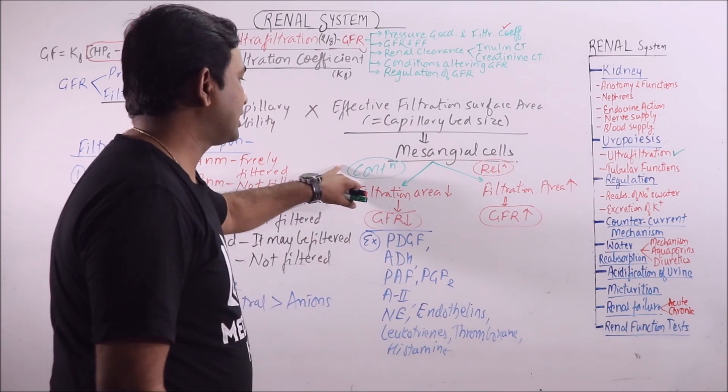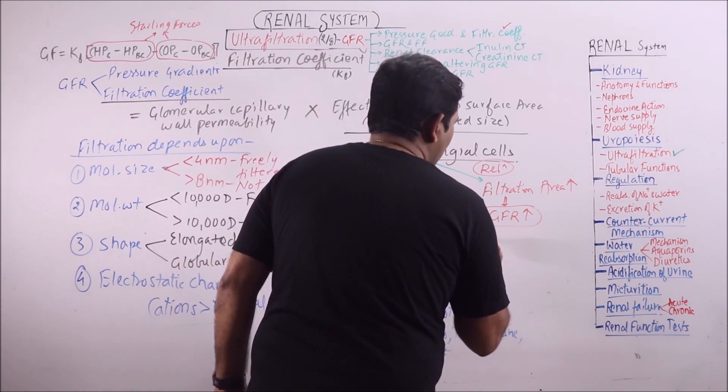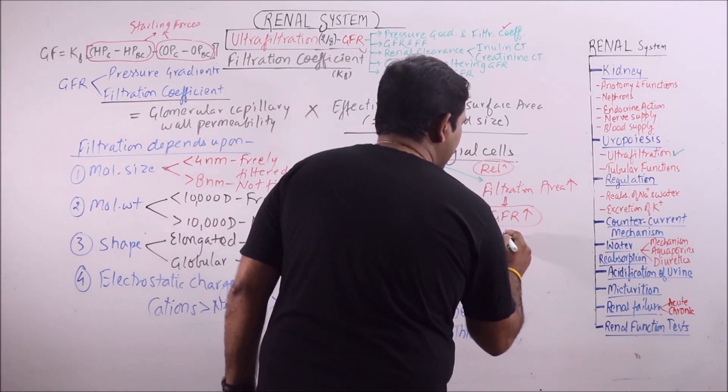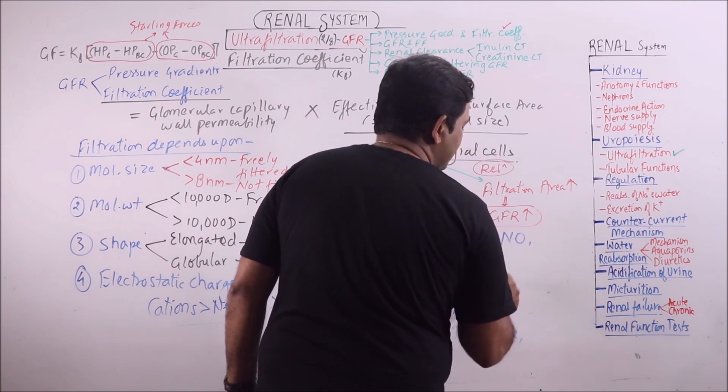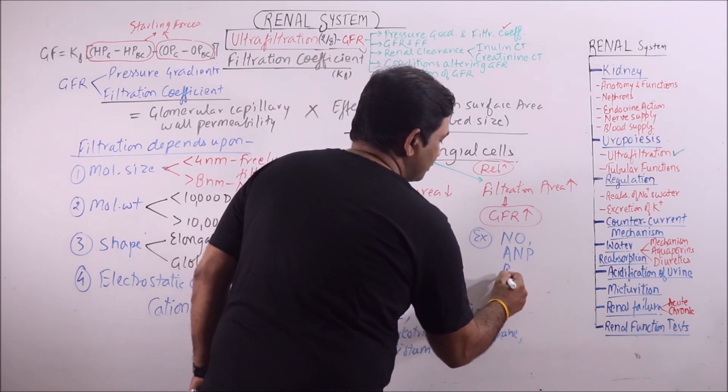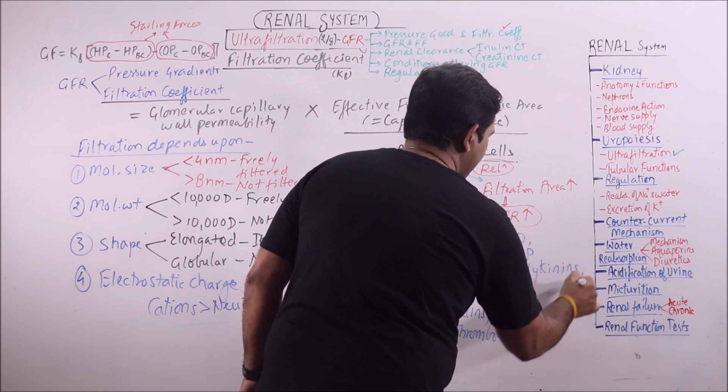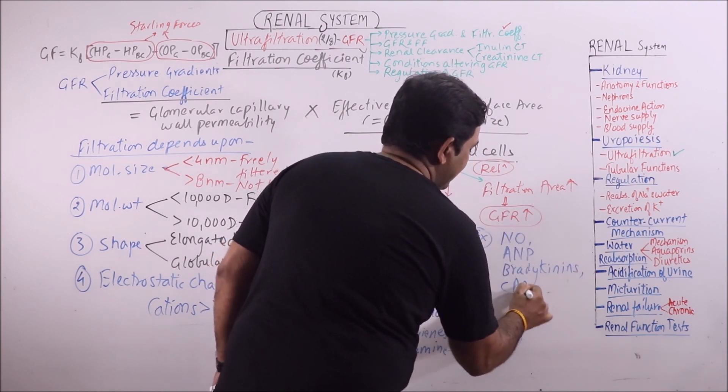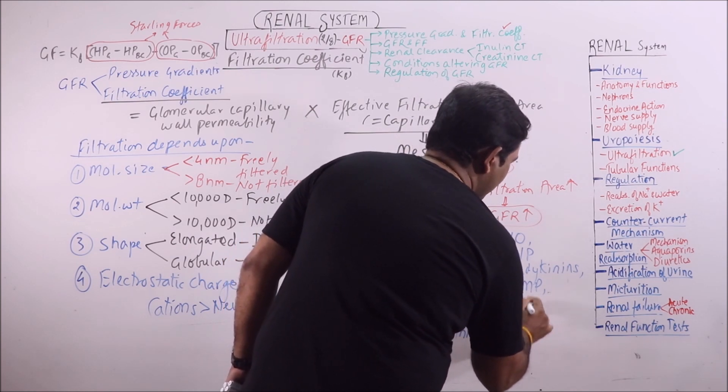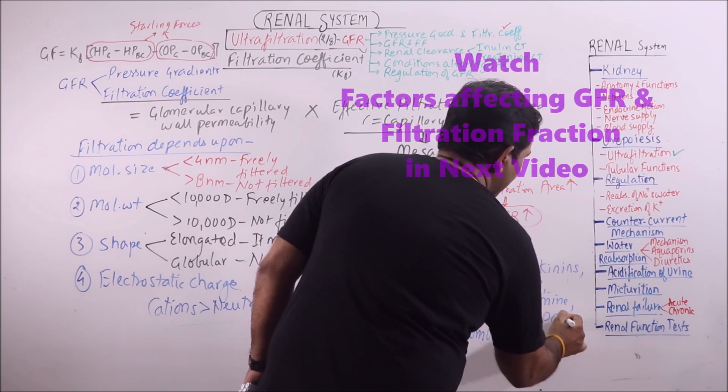These chemicals result in contraction of mesangial cells finally resulting in decrease in GFR, while those chemicals which result in relaxation of mesangial cells are nitric oxide, atrial natriuretic peptide, bradykinin, cyclic AMP, then dopamine, and prostaglandin E2.